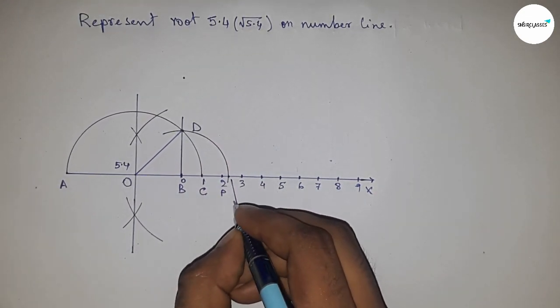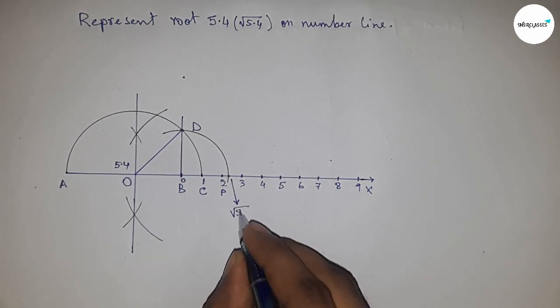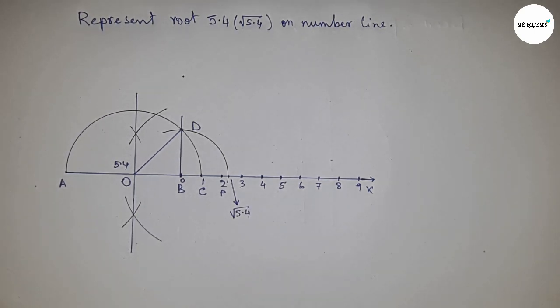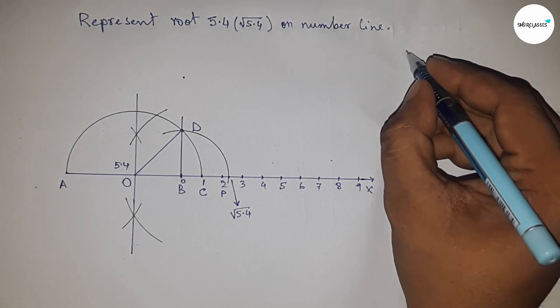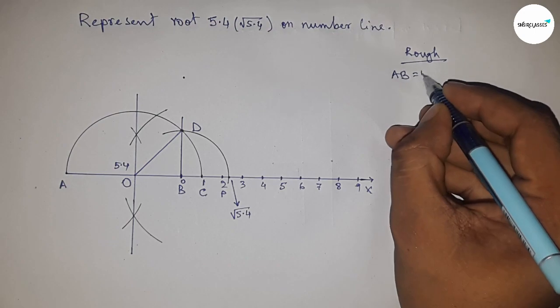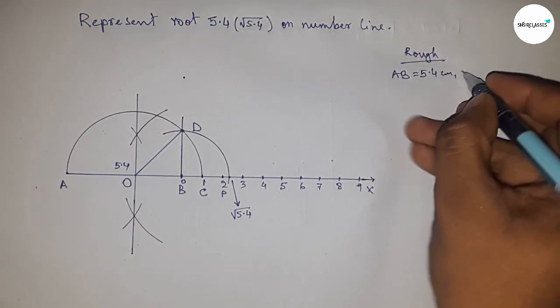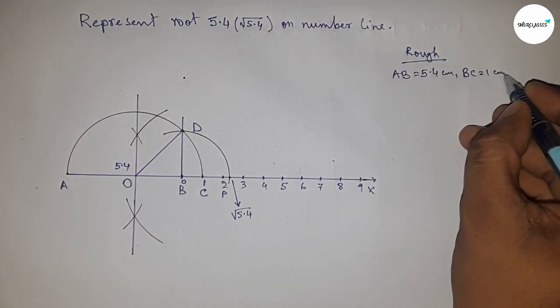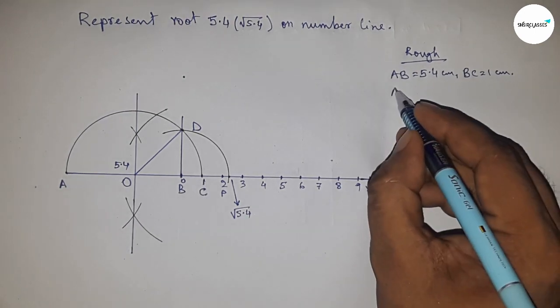Now discussing the back calculation roughly. Given AB equals 5.4 centimeters, BC equals 1 centimeter, so we can write AC equals 5.4 plus 1, so 6.4 centimeters.